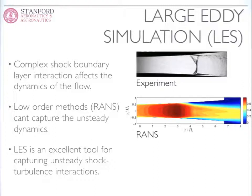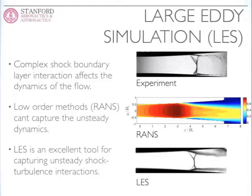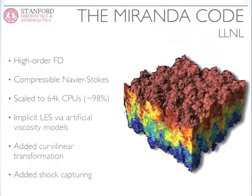In the LES approach, we're explicitly resolving as many turbulent scales as possible — that's why it's called large eddy simulation. Eddies, or turbulent motion of larger scales that contain the most amount of energy, are explicitly resolved on a computational mesh. The type of result you get from an LES calculation, as shown from our calculation on the identical geometry and flow conditions, shows the shock wave structure is much more predictive compared to the experiment, as is the separation downstream of the shock wave. The particular flavor of LES we're doing is called implicit LES, using the Miranda code developed at Lawrence Livermore National Lab.